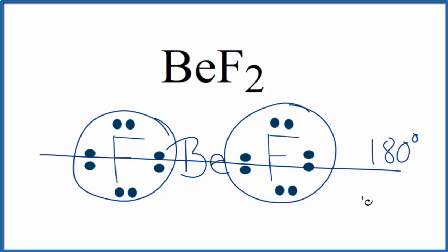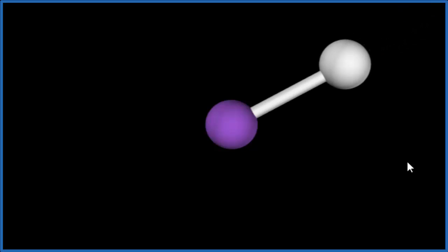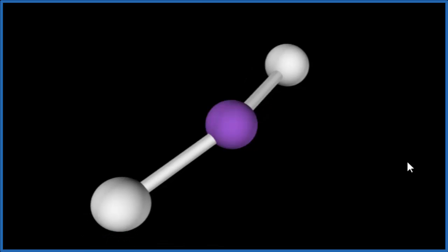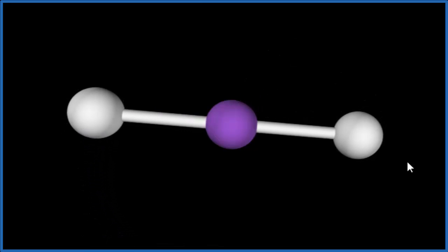Let's take a look at a visualization of that. So the purple, that's the central beryllium atom. We're going to add two fluorine atoms. We add one. And watch what happens when we add the second one. They push away so they're as far away as possible from each other. That gives us the linear molecular geometry with a bond angle of 180 degrees.